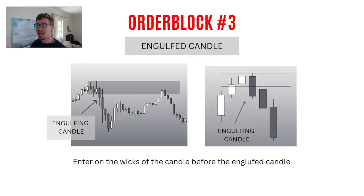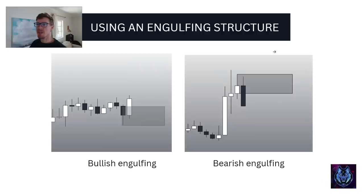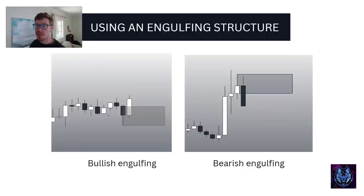Order block type three: engulfing candles. These are great indications. As soon as we get an engulfing candle to the downside that has momentum, the candle before it acts as the order block. Here you can see — engulfing candle, and the candle before is the order block. Here are more examples: we've got this big candle which is the displacement, and the one before it acts as the order block. Because if a big move is happening in the market, that is where the order was placed — and we know on that zone that orders are being filled.